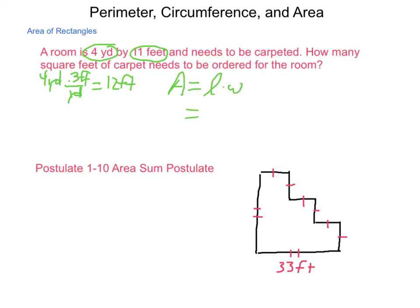So, our area of a rectangle is length times width. So, we have 12 feet times 11 feet. 12 times 11 is 132. A foot times a foot, well, anything multiplied by itself is called squared. So, we get 132 square feet.